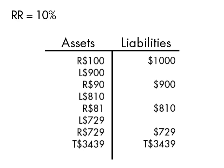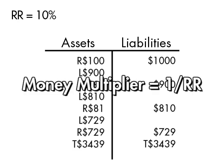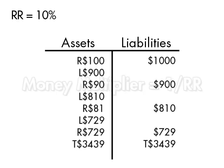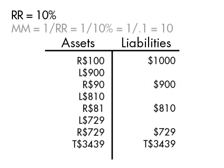Eventually it's going to peter out. Once all of that happens, the money on our ledger from all this fractional reserve banking will have multiplied by a factor of 1 divided by the reserve ratio. So with a 10% reserve ratio, the money multiplier will be 10 times. Our original $1,000 will turn into $10,000 by the time this is all done.